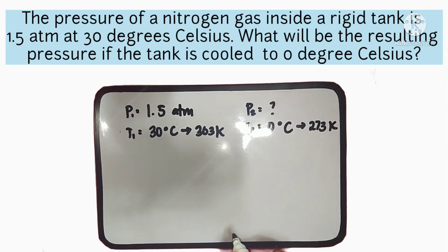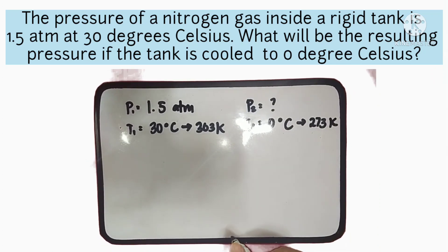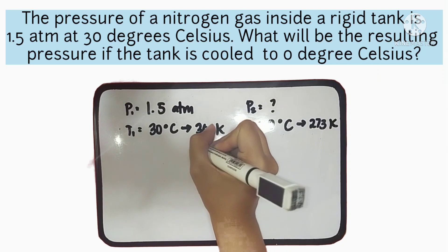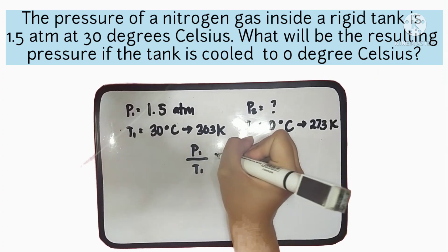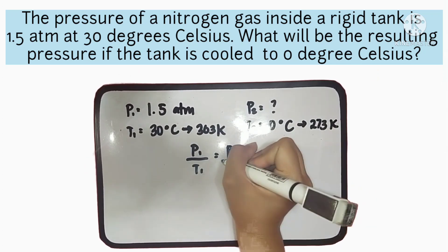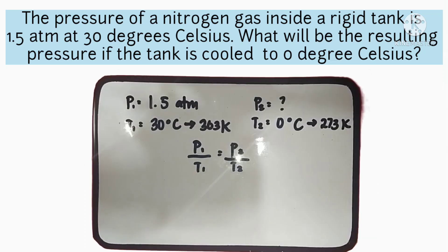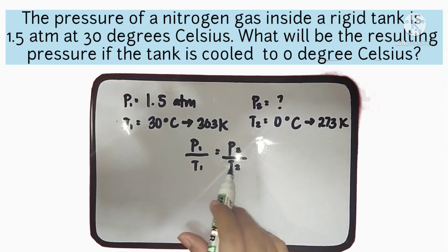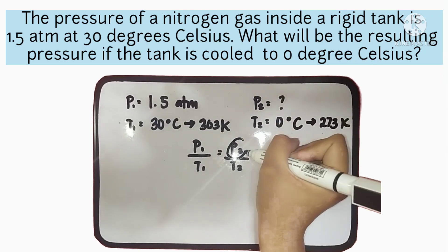Looking back with the Gay-Lussac's Law formula, in which P1 over T1 is equal to P2 over T2, we will derive this formula, since we are looking for P2.